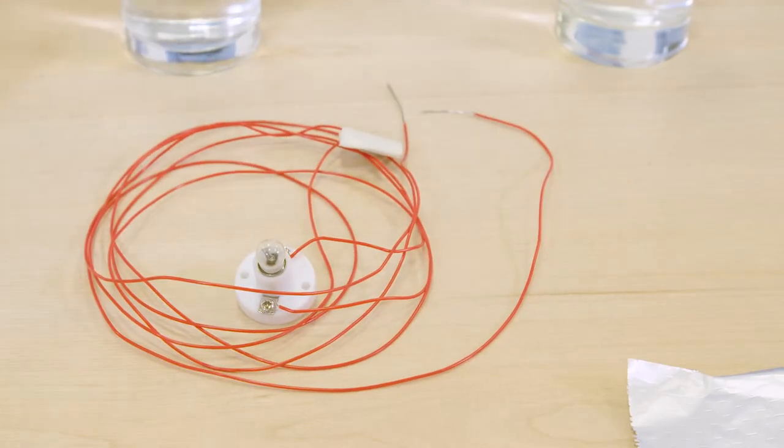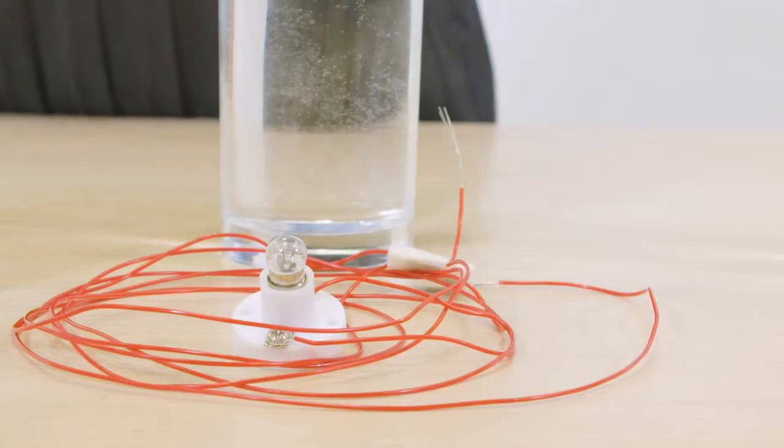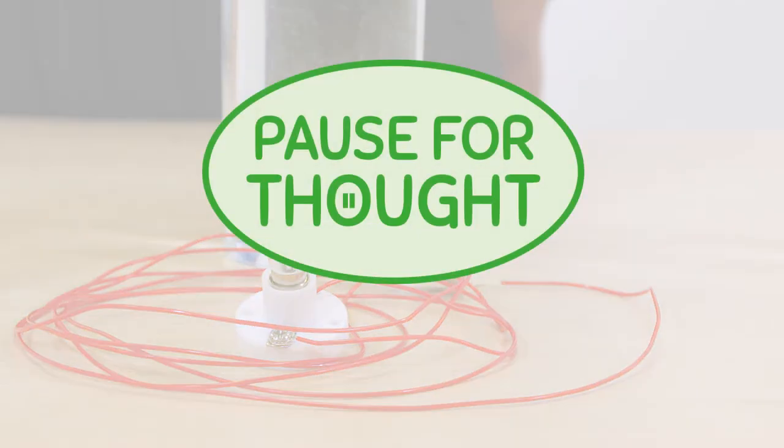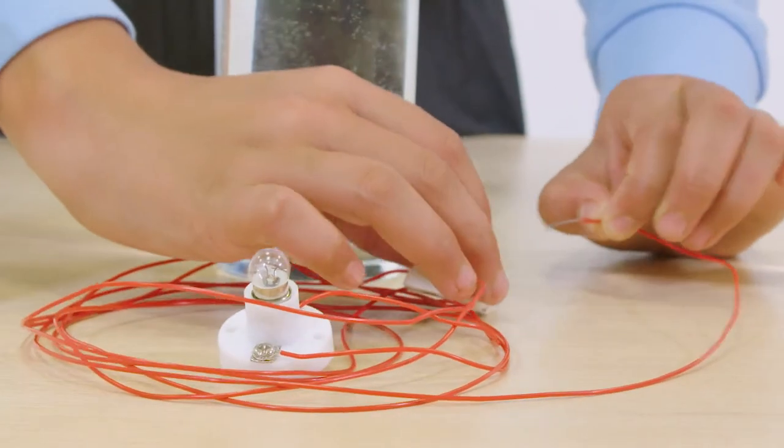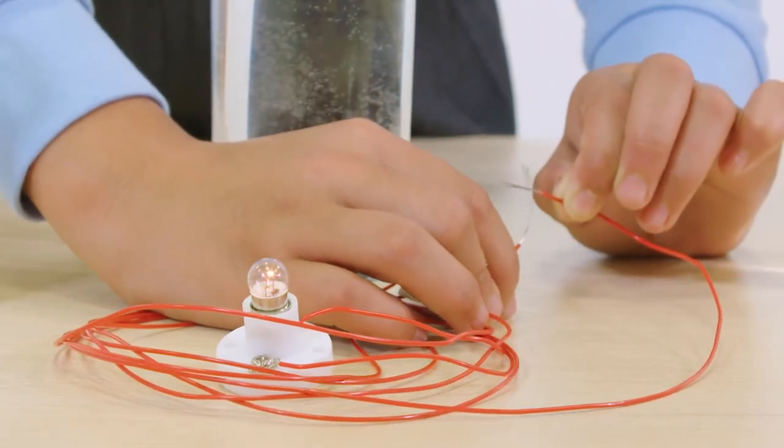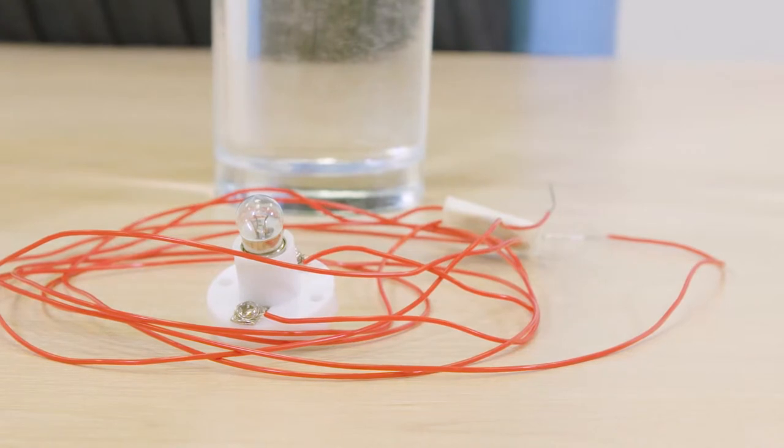We've made our circuit already. Let's just test the circuit to see if it's complete. How can our investigators test their circuit? The bulb lights up when we complete the circuit. Now we are ready to start the investigation.